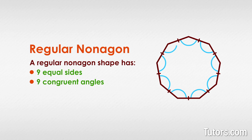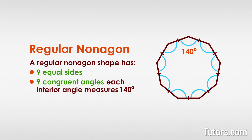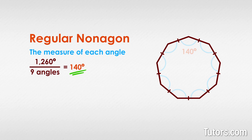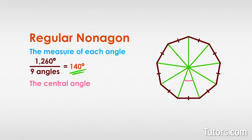A regular nonagon has nine equal sides and nine congruent angles. In a regular nonagon, each interior angle measures 140 degrees — a subtle and beautiful design that is very nearly a circle but not quite. To find the measure of each angle, you take 1260 degrees divided by nine, which equals 140 degrees. The central angle of a nonagon is 40 degrees, calculated by dividing 360 degrees by nine.